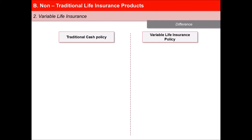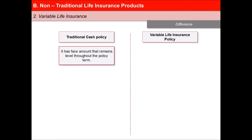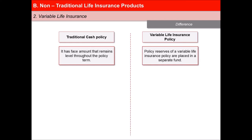In case of a traditional cash value policy, the face amount remains level throughout the policy term. The cash value grows with premiums and interest earnings at a specified rate. Whereas in case of variable life insurance, assets representing the policy reserves are placed in a separate fund — they are not a part of the general investment account.